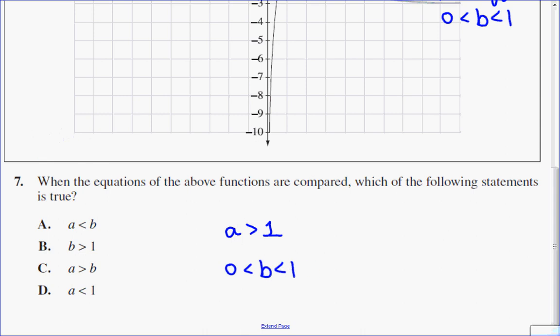The first one is that a is less than b. a is definitely a bigger number because it's an increasing graph. If a is greater than 1 and b is a number between 0 and 1, for sure I know that a is greater than b. So it's not this option.